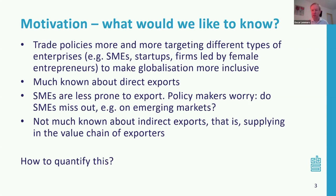We know that SMEs — small and medium-sized enterprises — are less prone to export. That means policymakers are getting very nervous because SMEs might be missing out on all these emerging markets where trade and the economy are booming, contrary to the old continent, Europe. What we do not know is these indirect exports — supplying in the value chain of exporters — and the goal is to have methods to quantify them.